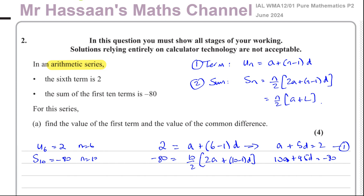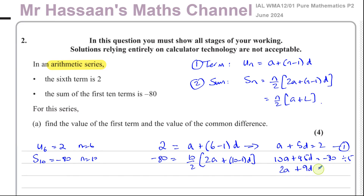We can simplify this equation. Each term is divisible by 5: 10a divided by 5 is 2a, 45d divided by 5 is 9d, and negative 80 divided by 5. After working through the arithmetic, this simplifies to 2a plus 9d equals negative 16.